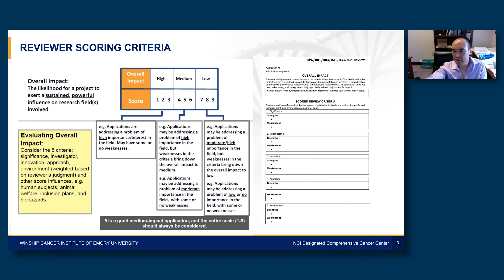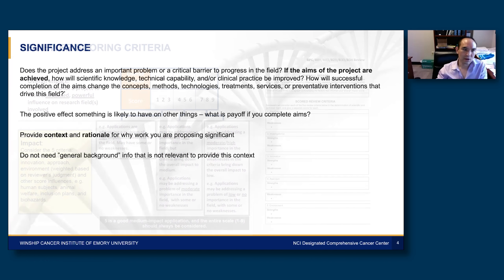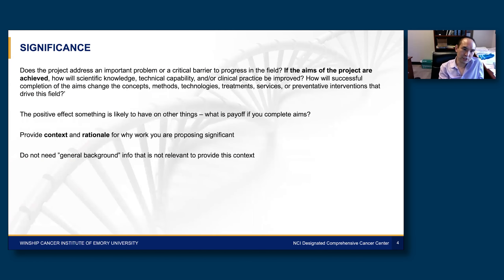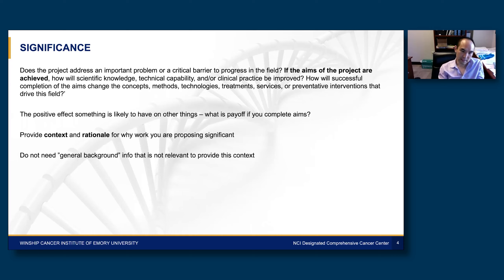The reviewer template on the right consists of bulleted points — strengths and weaknesses. Significance is how the project addresses an important problem or a critical barrier to progress in the field. If the aims are achieved, how will scientific or technical capability or clinical practice be improved? And how will successful completion of the aims change the concepts, methods, technologies, treatments, services, or preventative interventions that drive the field? When I think about significance, I think: what's the return on the investment? Should we fund this grant? It's important to provide context and rationale for why you're proposing the work, without including general background info unless it's relevant.